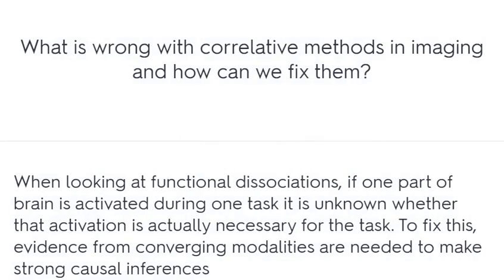What is wrong with correlative methods in imaging and how can we fix them? When looking at functional dissociations, if one part of the brain is activated during a task it is unknown whether that activation is actually necessary for the task. To fix this, evidence from converging modalities is needed to make strong causal inferences.